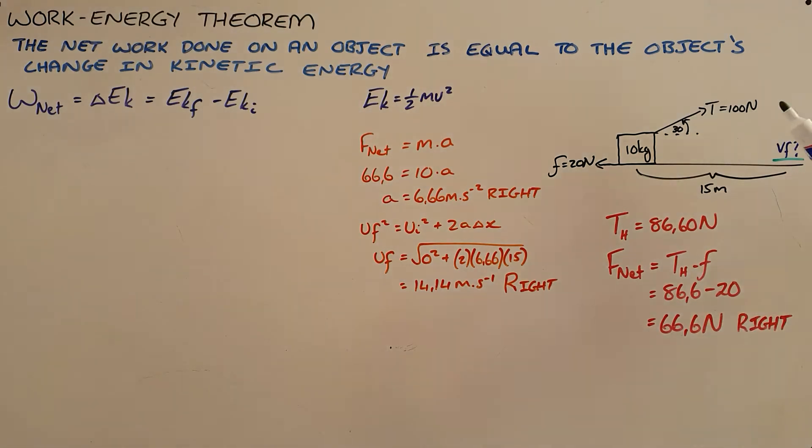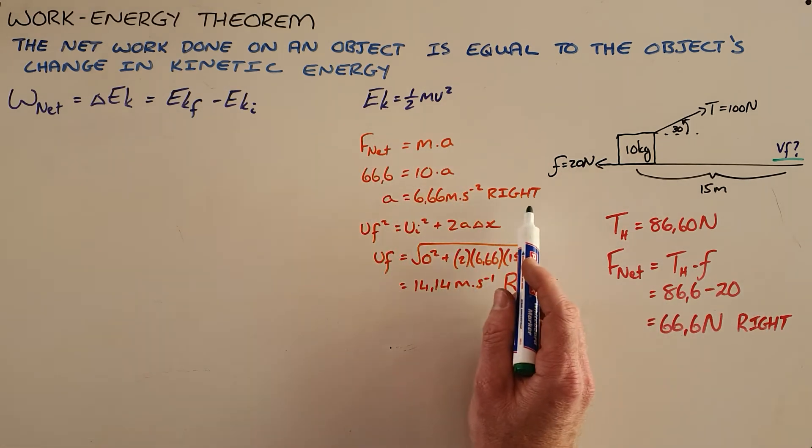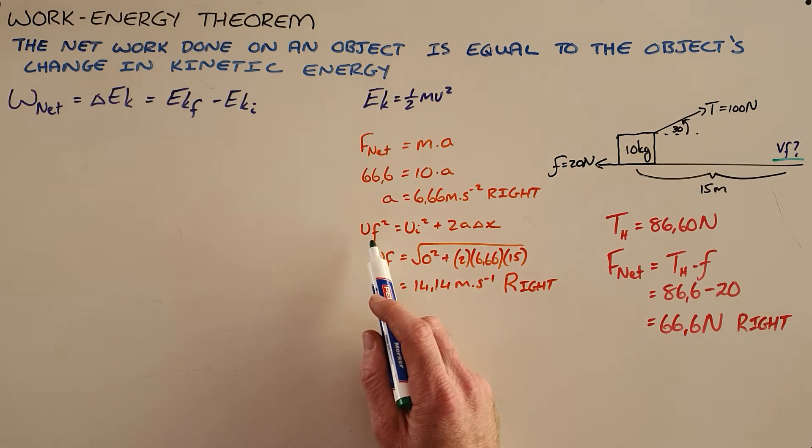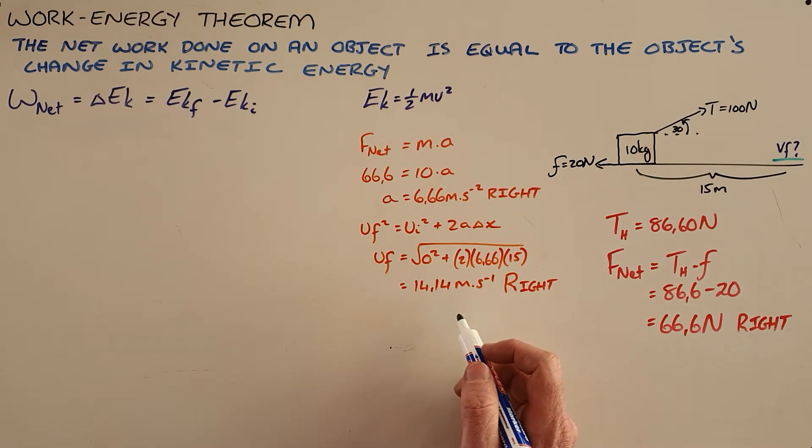And then we would need to start by calculating the horizontal component of the tension force, then the net force acting on that object, and then use Newton's second law to find the acceleration of that object and then find this appropriate equation of motion to determine the velocity of this object, which we find here is 14.14 meters per second to the right.